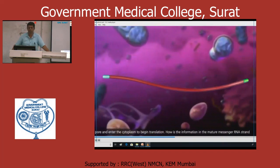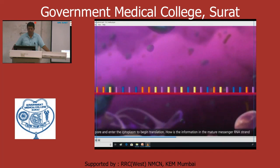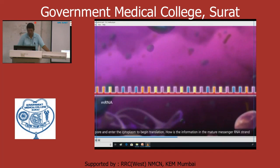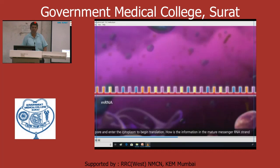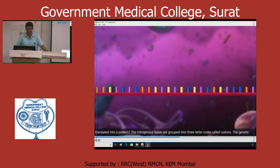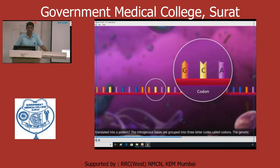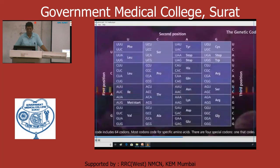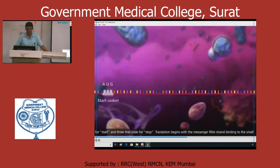Now translation starts. In translation, first see the basic stage, then concentrate on the initiation and elongation factors. This strand is translated into a protein. This is mRNA. This is a codon — start codon and stop codon.